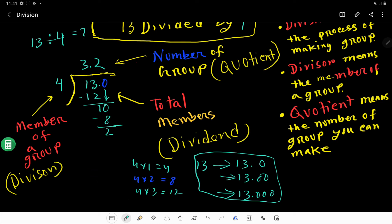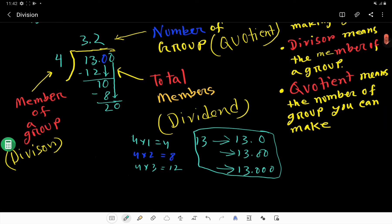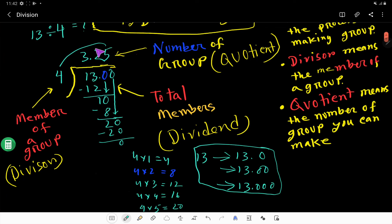This 2 is also less than 4, so I will take another 0 and bring it down beside 2, making 20. 4 goes into 20 how many times? 4 times 4 equals 16, and 4 times 5 equals 20. So 4 goes into 20 five times. 5 times 4 is 20. We are getting 0 here. So 3.25 is the result.